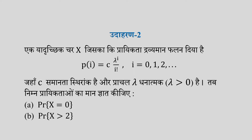So the random variable X has this probability distribution. This probability distribution has been given. So the random variable X has this probability distribution with parameter λ. When i takes values 0, 1, 2, and so on.